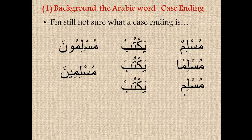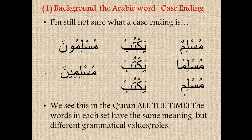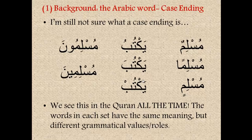And lastly, we have the words muslimuna and muslimina — both mean Muslims, but the first has a waw and the second has a ya. We see this in the Qur'an all the time. The words in each set have the same meaning, but each word has a different grammatical value and role — and that's what the case ending tells us. Arabic grammar answers such questions as: when is it appropriate to say muslimun, musliman, or muslimin? In each particular sentence, there is only one correct answer. That's basically the gist of case ending analysis, or i'rab — a very detailed science we will address in future lessons.